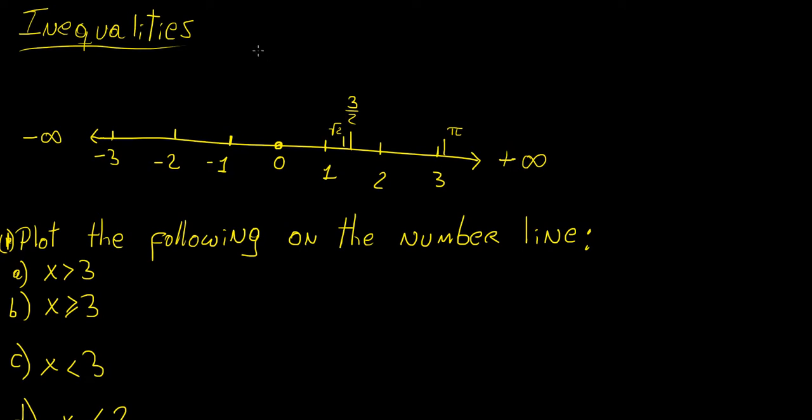If I were to give you an example, let's say we want all the numbers that are greater than zero. Then we would draw a dot here - a circle, but an empty circle because we're not including zero in this set of numbers. We're just including everything greater than zero. So we draw an arrow pointing towards the right because we're saying...